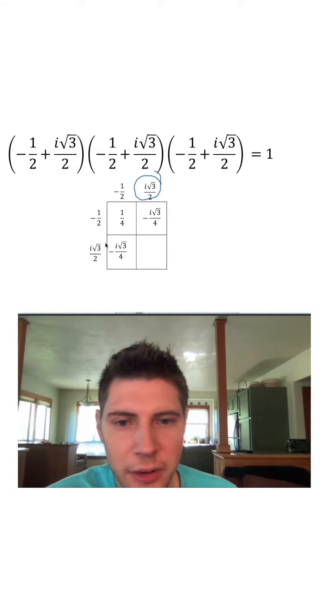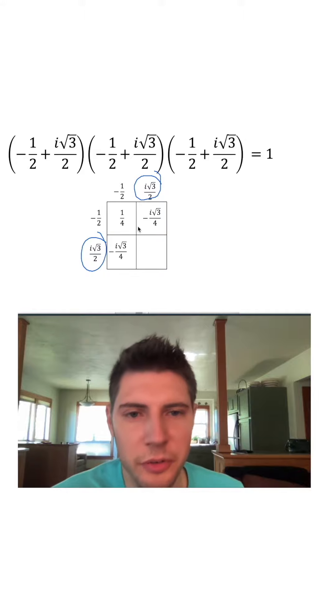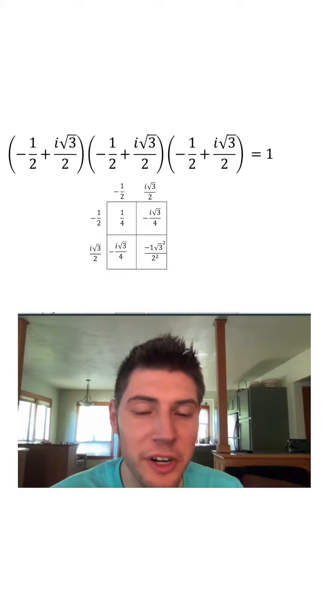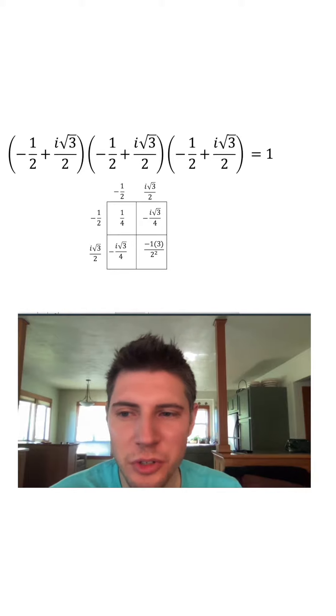And for this last box, we're going to do i root three over two times i root three over two. i times i is i squared. Root three times root three is root three squared. And two times two is two squared. We can clean this up. i squared is the same thing as negative one. Root three squared is three. And two squared is four, just negative three-fourths.